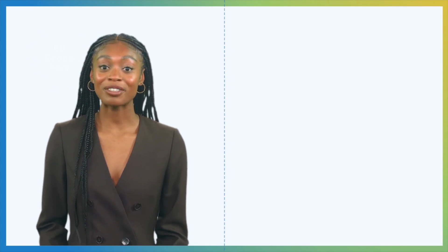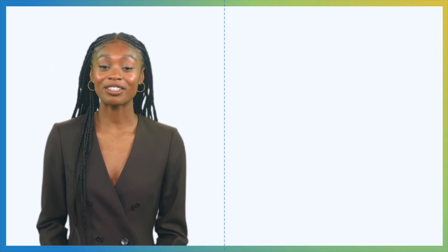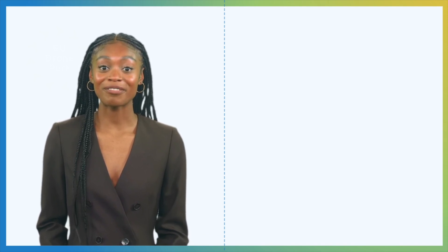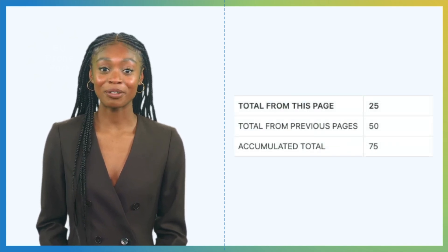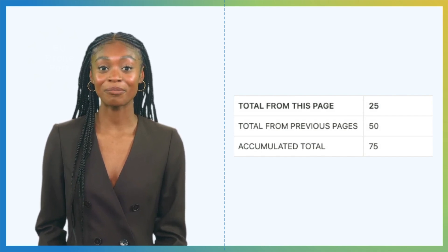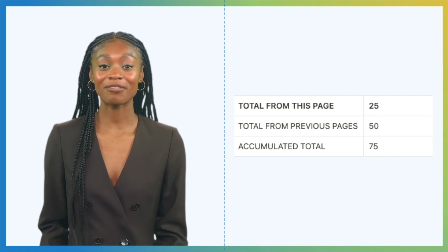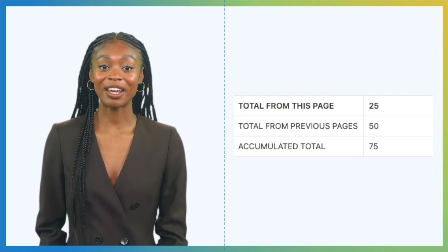The number of hours the pilot has flown should be recorded in logbooks. If keeping a paper logbook, you must record the hours on each page. After flipping to the next page, keep adding up the flights while factoring in the total from the previous page. For instance, in this example the current page records a total of 25 flight hours, the sum of previous pages amounts to 50 flight hours, and the sum of previous pages with the current page results in a total of 75 flight hours.